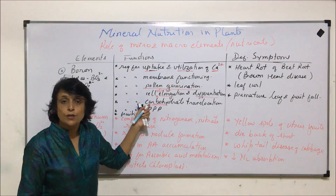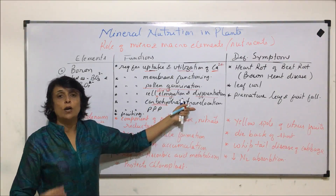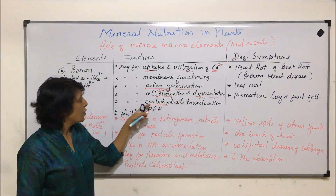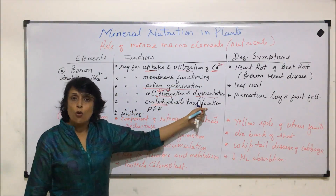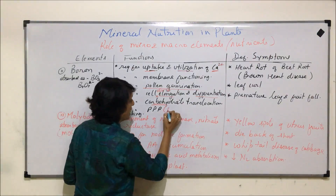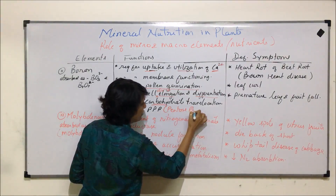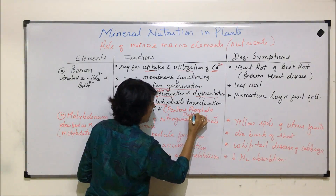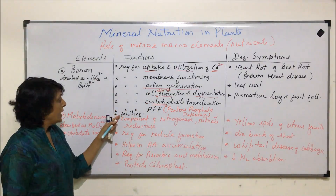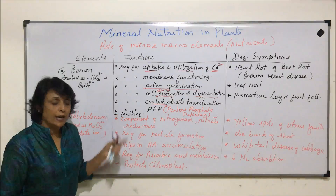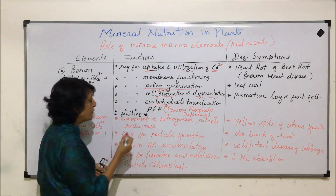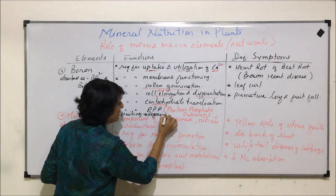Boron also helps in the translocation of carbohydrates synthesized in the leaves during photosynthesis to storage organs such as roots and fruits. It is also required for the pentose phosphate pathway (PPP), for fruit formation, and for regeneration of tissues.